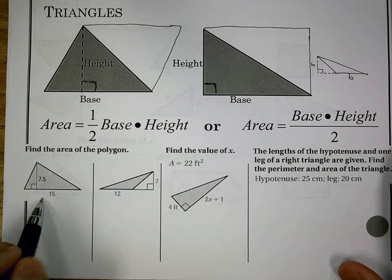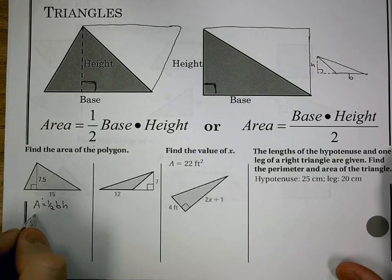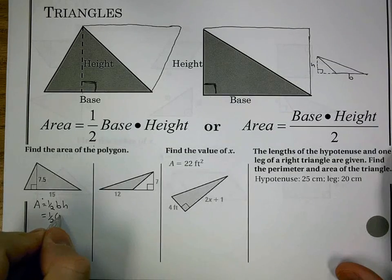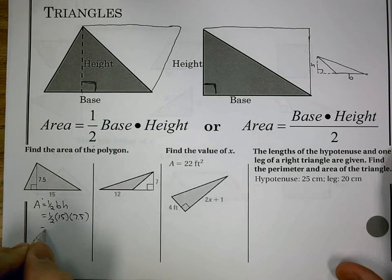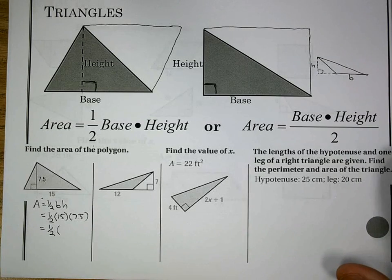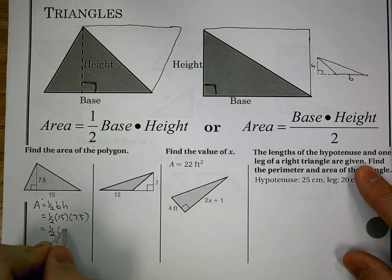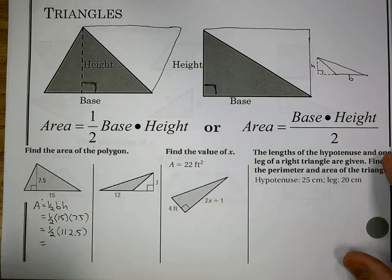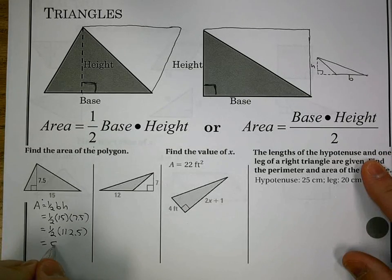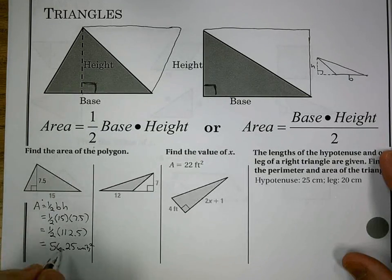So let's work through a couple of examples. First one, I have 7.5 as my height, 15 as my base. So 1 half base times height. I get 1 half 15 times 7.5. 7.5 times 15 is, let's try to get the right value here, 112.5. And we just need to take half of that. Well, half of 112 is 56. Half of 0.5 is 0.25. So I get 56.25 units squared. That's my area.